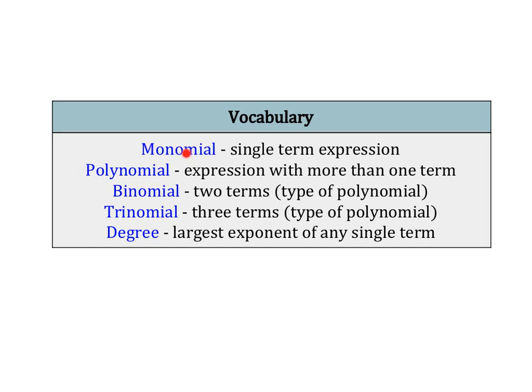First, monomial is any single term expression. Polynomial is a more broad term. It's pretty much any expression with more than one term. Now there are two specific types of polynomials that have specific names. They are binomial, which is a two-term expression, and trinomial, which is a three-term expression. Anything more than that we just call polynomial.